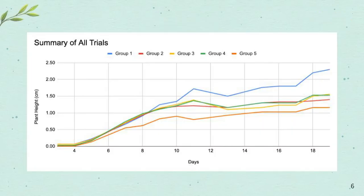Here are my results on a graph. Each group is represented by a different color on the graph. All of the plants were able to grow over one centimeter, which was great.